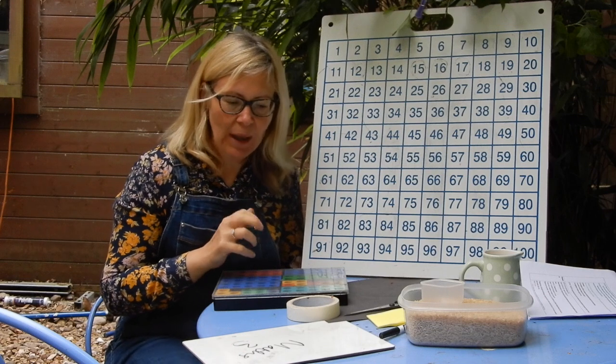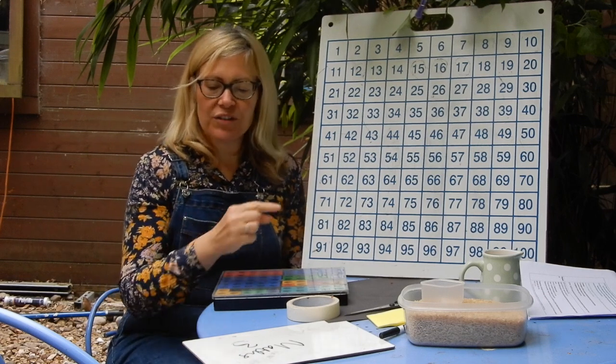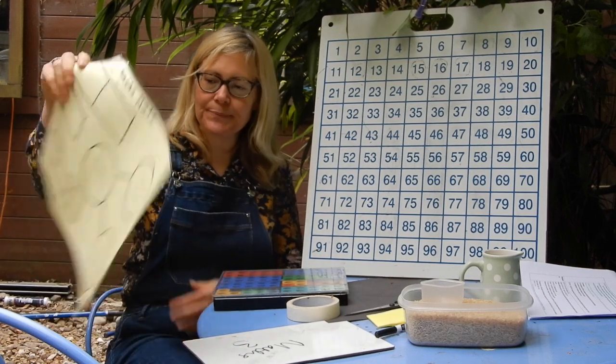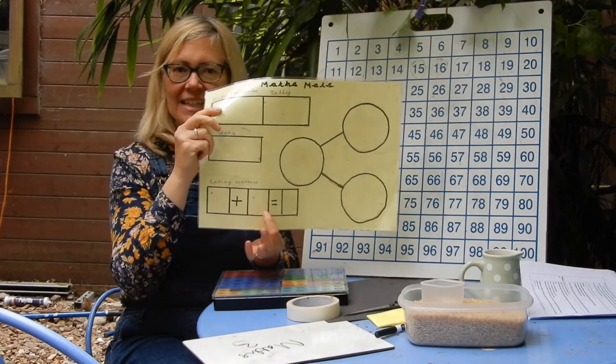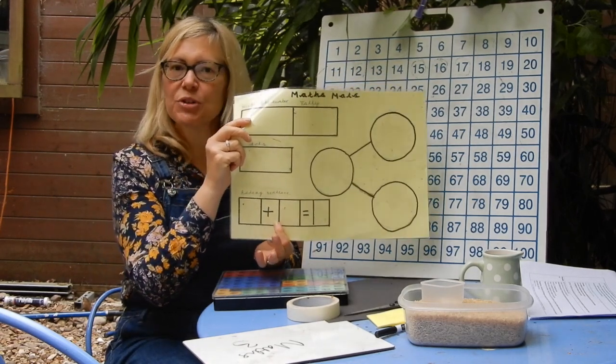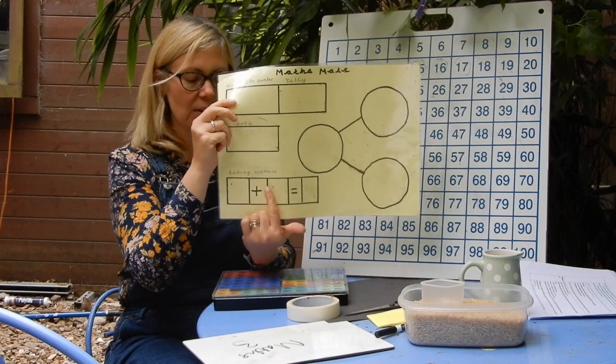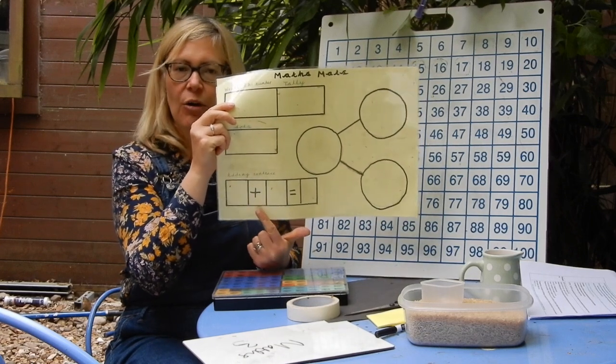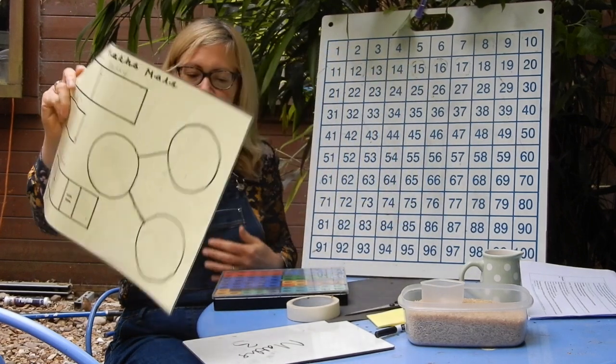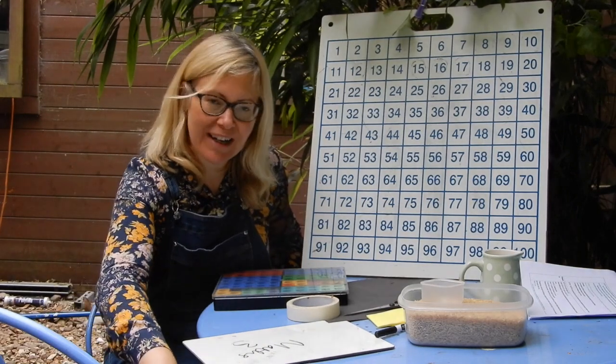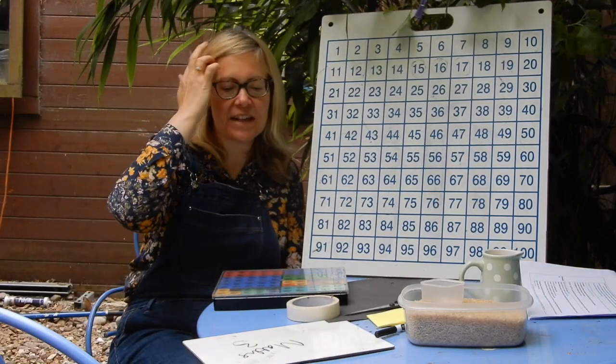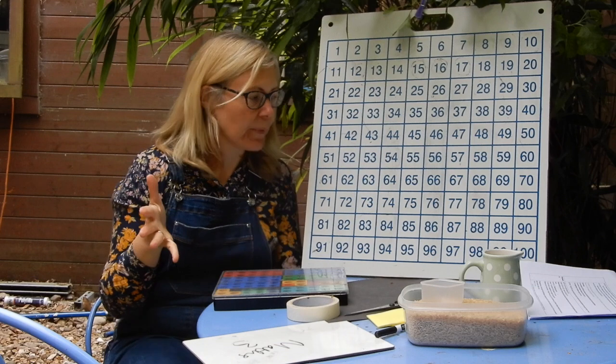A friend of mine also changed the bottom bit here where it's an adding sentence and turned it into a subtraction, a takeaway sentence by changing the symbol here on box two. So maybe you could do that as well and have a go at doing a subtraction sentence for your number of the day rather than an adding one.